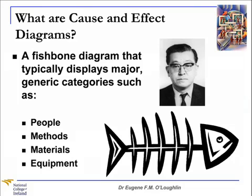What is a cause and effect diagram? It's generally regarded as a fishbone diagram that typically displays major generic categories such as people, methods, materials and equipment that cause an effect often perceived as a problem. It was first applied by Karo Ishikawa in 1950, and it can be used to systematically analyse cause and effect relationships and to identify potential root causes of a problem. It's a good idea to use a diagram like this to display in increasing detail all of the possible causes related to a problem.